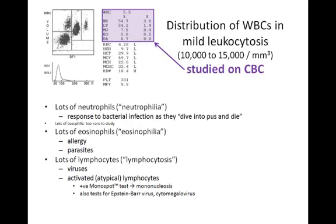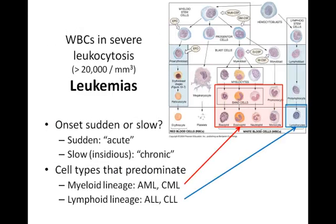Remember that in the words of immunologist Linda Clayton, neutrophils dive into pus and die — they're the cells tasked with responding to bacterial invaders. Eosinophils are elevated in allergies or parasitic infections. Lymphocytes are high when we're fighting a virus, and the exam question may also include additional data to tell you what type of virus you're dealing with. If the white blood cell count is really high — say 20,000, 30,000, 40,000 or more — then you're thinking leukemia, a kind of blood cell cancer.